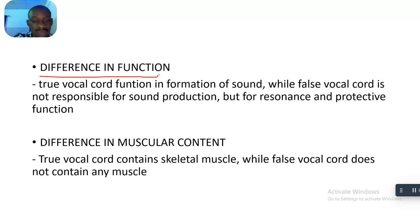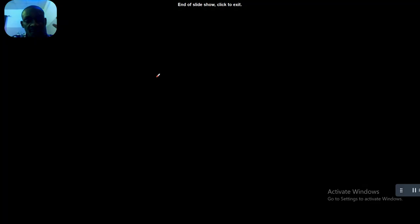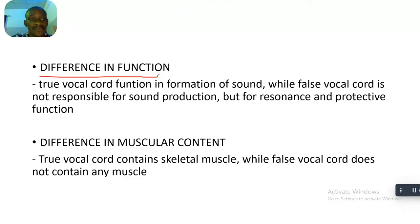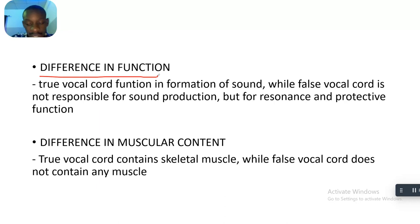The sixth difference is muscular content. The true vocal chords contain skeletal muscle, while the false vocal chords do not contain any muscle. That's six differences we have seen. That's the end of our differences between the true and the false vocal chords. See you guys in the next tutorial — bye for now.